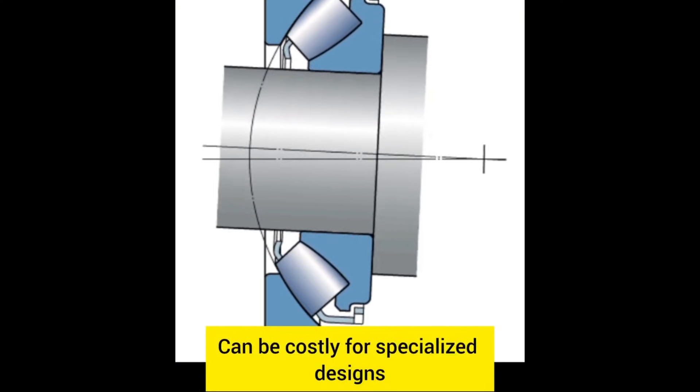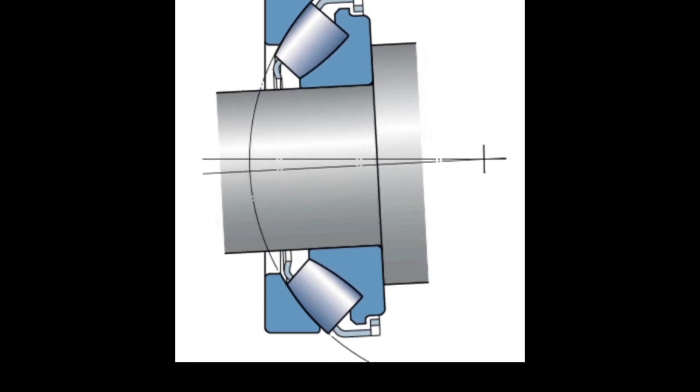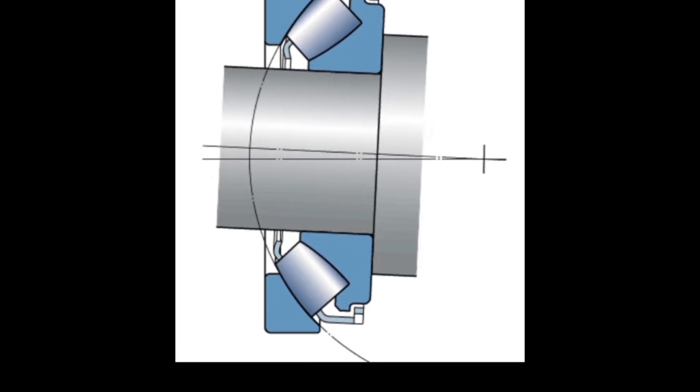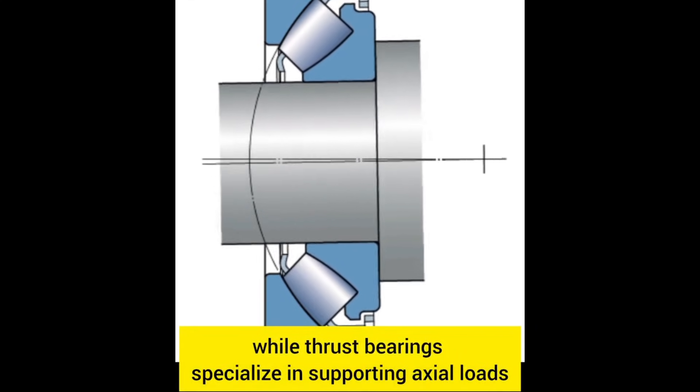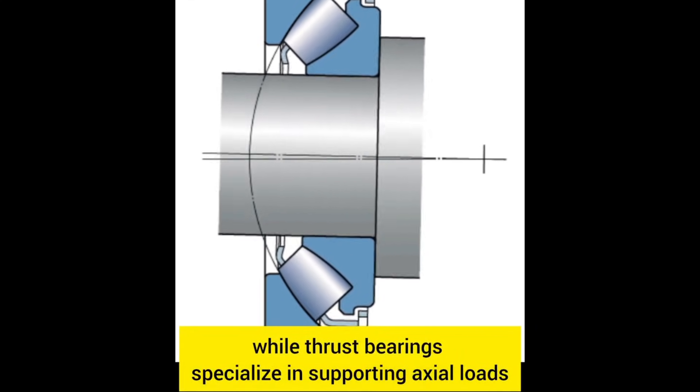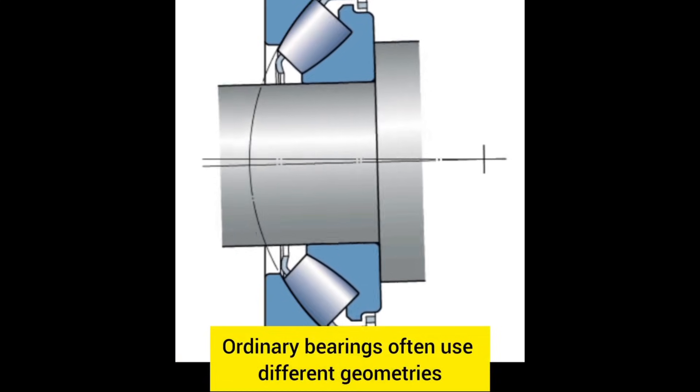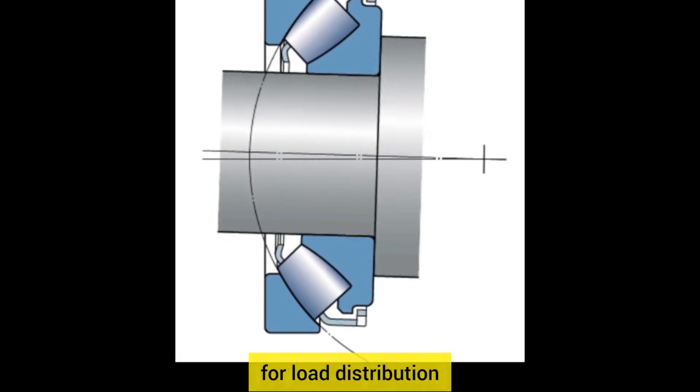Difference from ordinary bearings: Ordinary bearings primarily handle radial loads, while thrust bearings specialize in supporting axial loads. Ordinary bearings often use different geometries for load distribution.